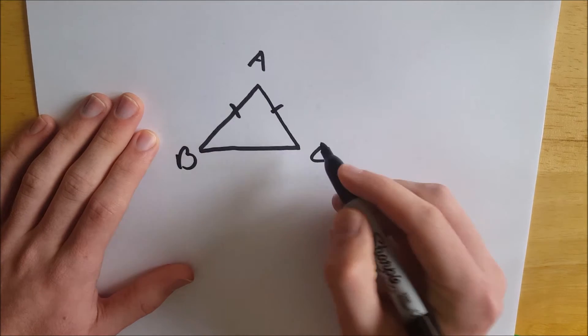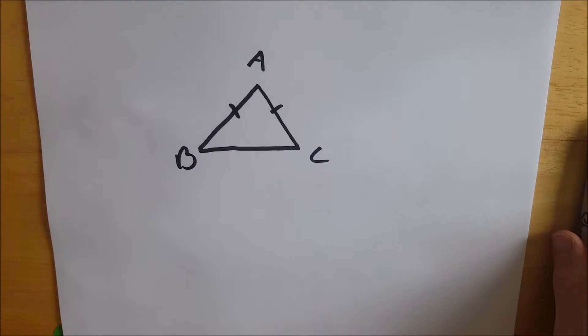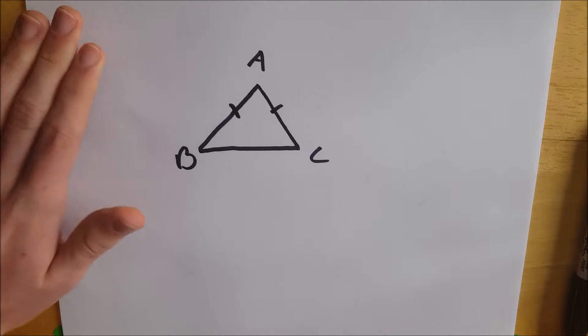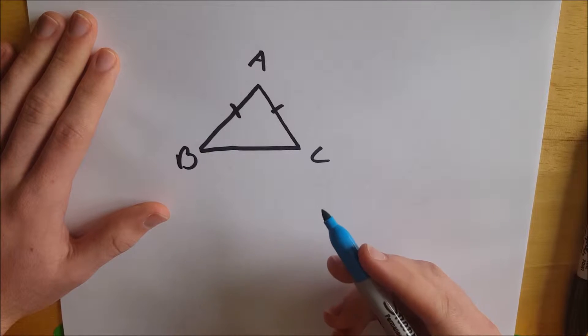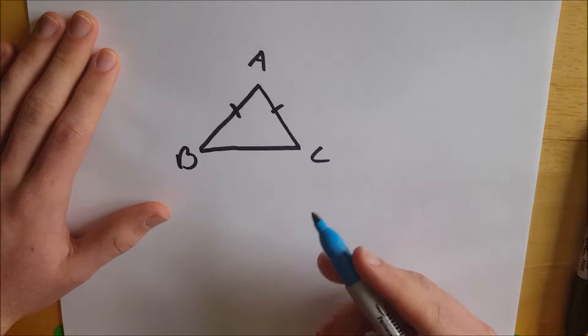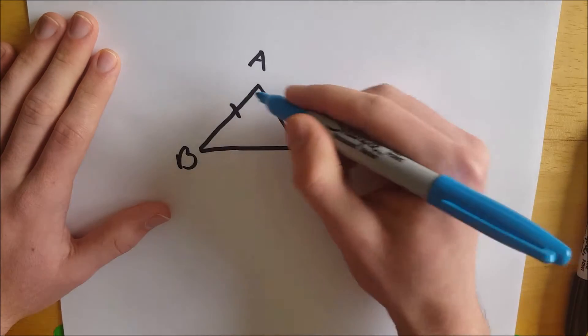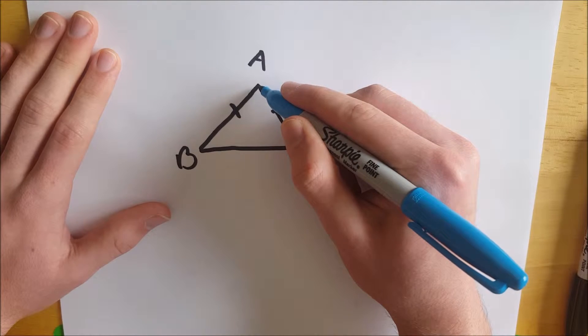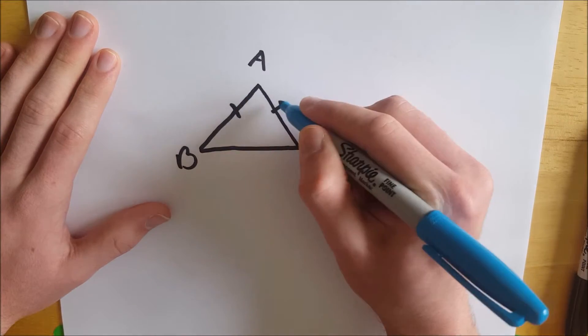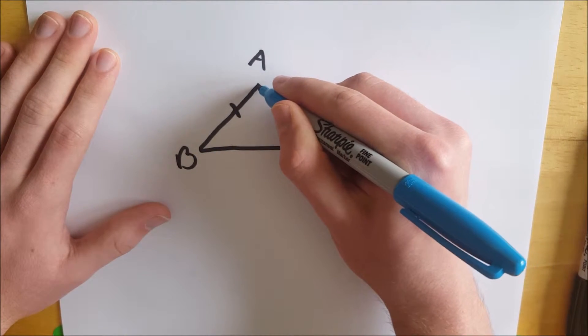So side AB is congruent to side AC and then we're going to drop the altitude. And of course when we're talking about the altitude of an isosceles triangle cutting two congruent triangles, we're talking about the altitude that has a vertex adjacent to the two congruent sides. So this one here.